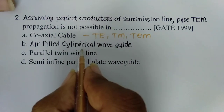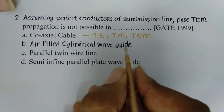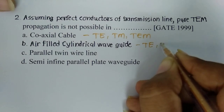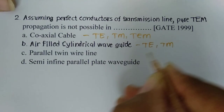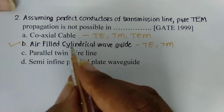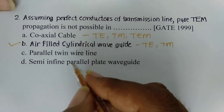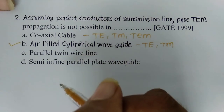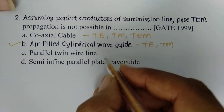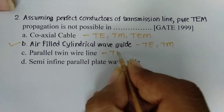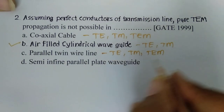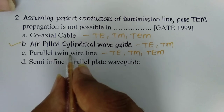For an air-filled cylindrical waveguide, only TE and TM modes are possible — TEM mode is not possible here. But we need to check all options as there could be two answers. For a parallel twin wire line, three modes are possible: TE, TM, as well as TEM, so TEM mode is possible there.